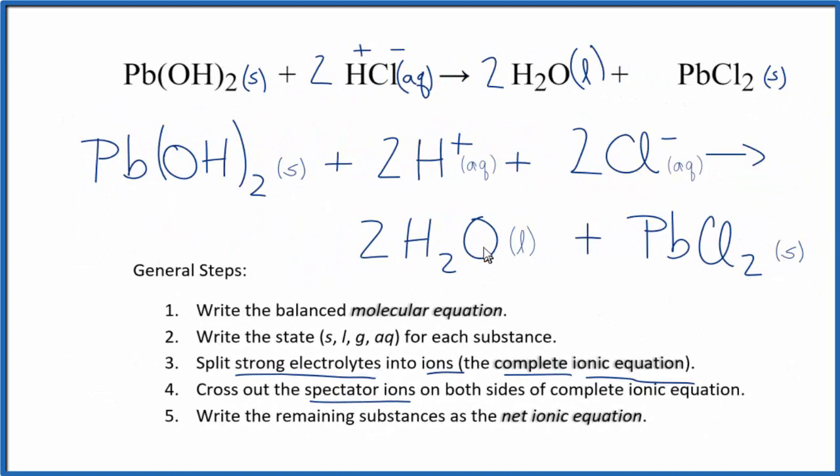So this is the net ionic equation for Pb(OH)₂ plus HCl, lead 2 hydroxide plus hydrochloric acid. We have our solid lead 2 hydroxide, two hydrogen ions, two chloride ions, liquid water plus solid PbCl₂. So it's important when you write net ionic equations to check and see if the actual substance is going to be soluble. If it's not soluble, then it's going to be a solid. And we need to write that in the net ionic equation, and then we don't split those up.